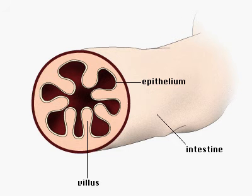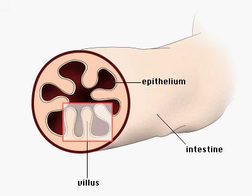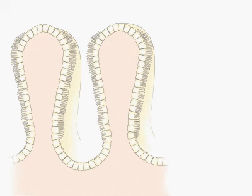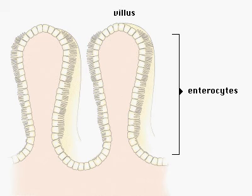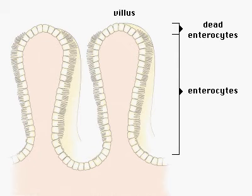Nutrients are absorbed in the intestinal tract by a lining of epithelial cells. Villi are folds in the lining which increase surface area. Enterocytes on the surface of the villus carry out the absorptive function. They are continually lost from the tip of the villus, but are replaced by stem cells at the base.